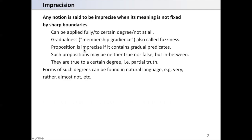A proposition is imprecise if it contains gradual predicates. Such propositions may be neither true nor false, but in between. They are true to a certain degree, that is partial truth.